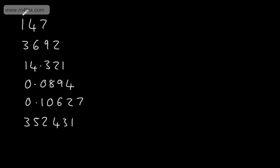We can see that this is in the hundreds column. So if we were rounding to one significant figure, we'd be rounding to the nearest 100. If we were talking about the second significant figure, we would have the four — this is in the tens column. So if we're rounding to two significant figures, we'd be rounding to the nearest ten.